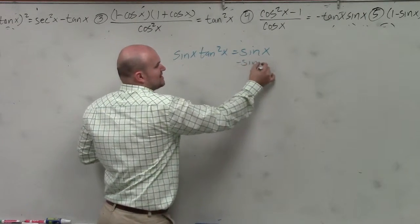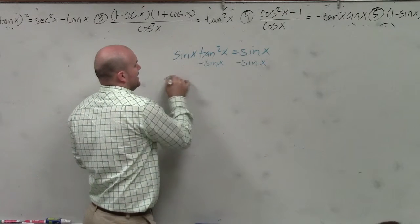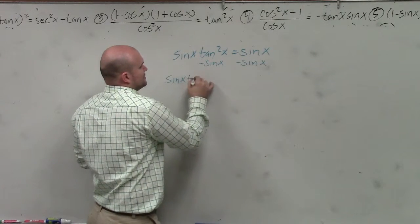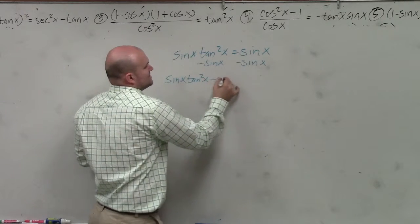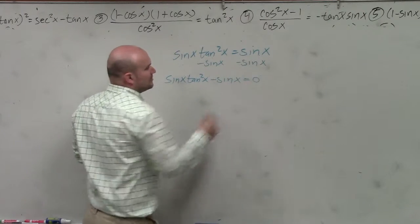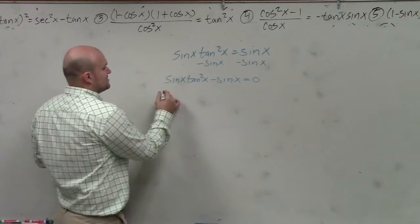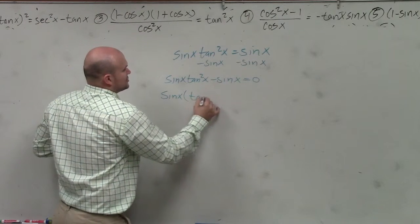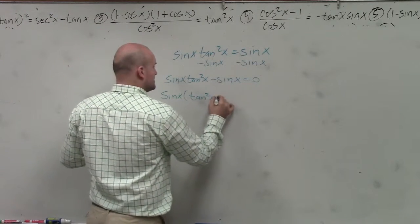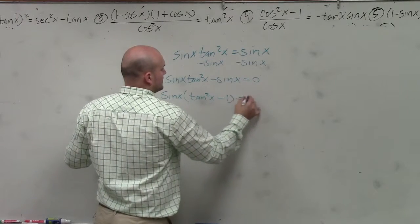So I subtract the sine of x on both sides. I have sine of x tangent squared of x minus sine of x equals 0. Now I can factor out a sine of x, and I get tangent squared of x minus 1 equals 0.